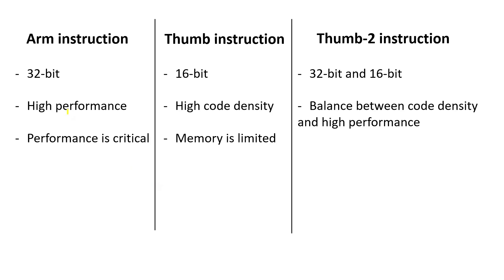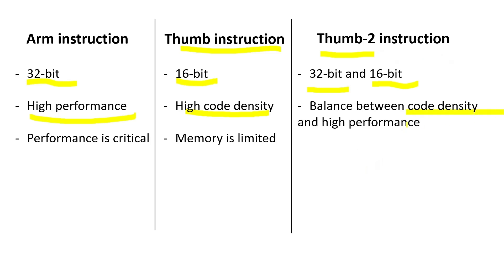In summary, we have three instruction sets. First is the ARM instruction set, which has 32 bits per instruction. Second is the Thumb instruction set, which has 16 bits — because it has only 16 bits, the code size is reduced. Third is the Thumb-2 instruction set, which is a good choice to balance between code size efficiency and high performance. The Thumb instruction set is the solution for applications where memory is limited, and ARM is for where performance is critical.